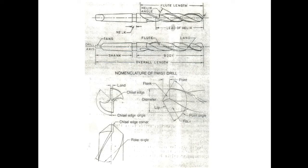This is the diagram showing a twist drill, indicating the neck, helix angle, flute length, and lead of helix. The second diagram shows the drill axis.